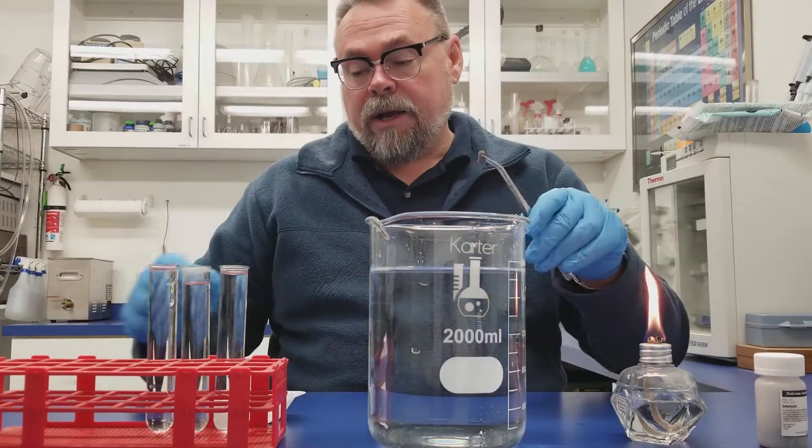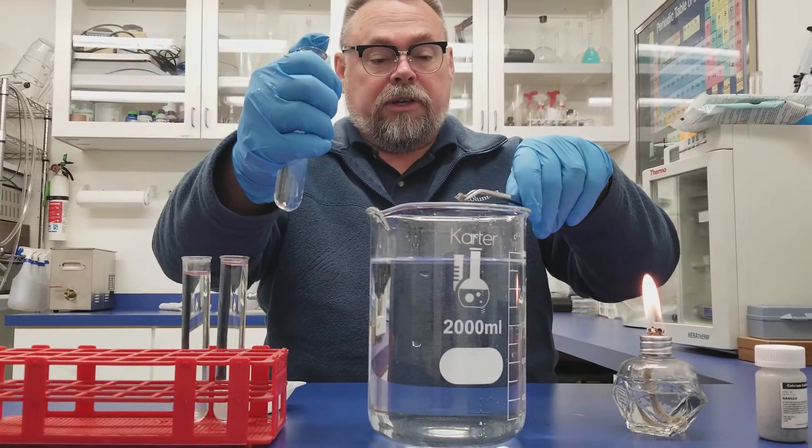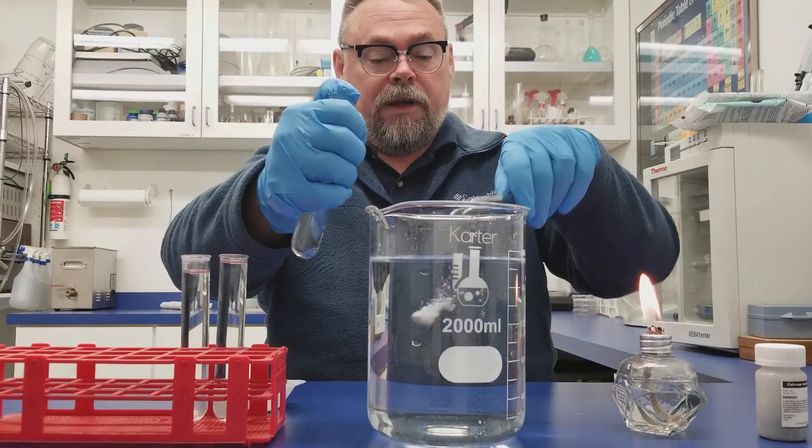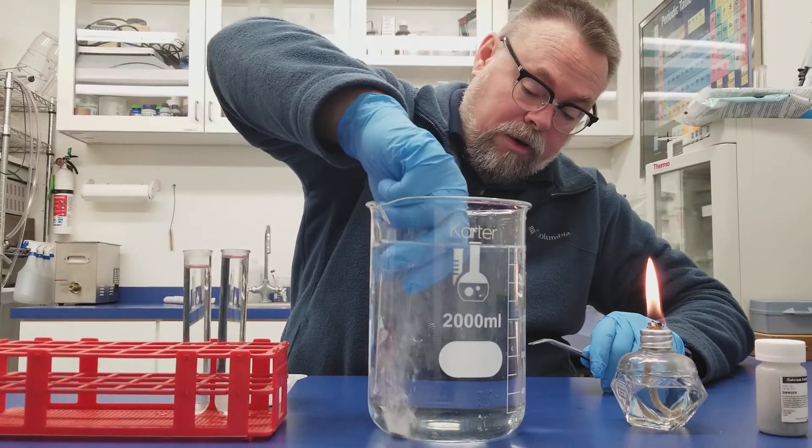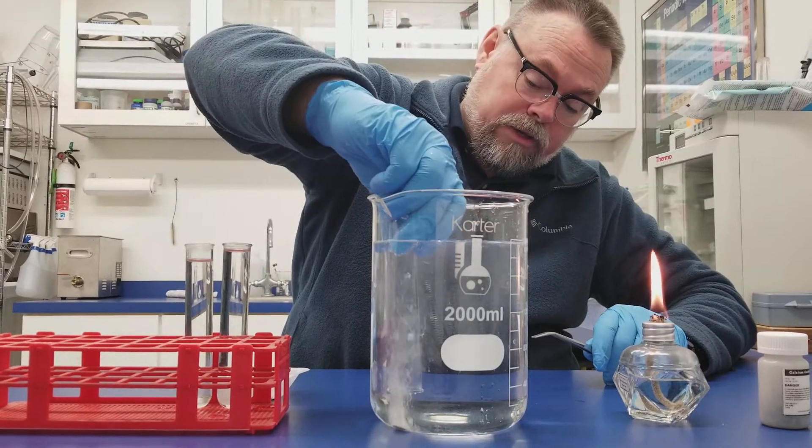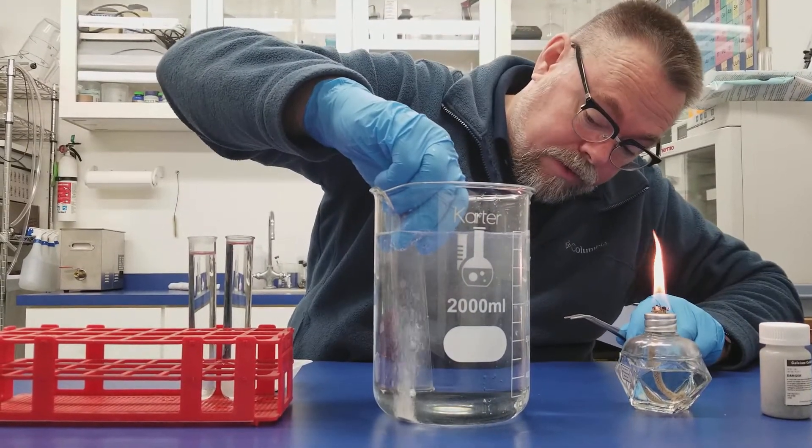So I'm going to drop this calcium carbide in there, and then I'm going to show you a stoichiometric reaction. So we're going to drop it in. Now I just got to get this over it, and I'm going to displace the water in this test tube with some acetylene gas. Make sure I'm getting over the top of it.